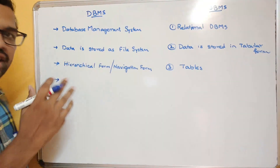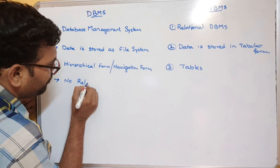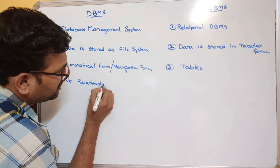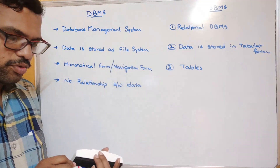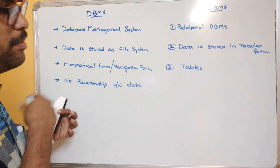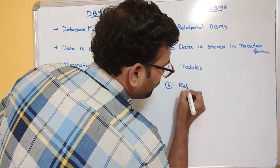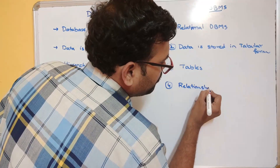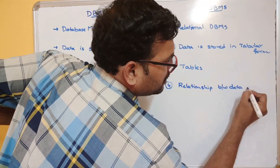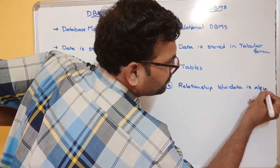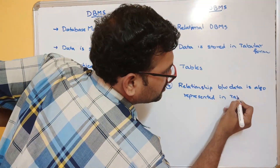In DBMS, there is no relationship between one file and another — no relationship between one piece of data and another, because it is stored in the file system. In RDBMS, data is stored in tables, so the relationship between data is also represented in tables.